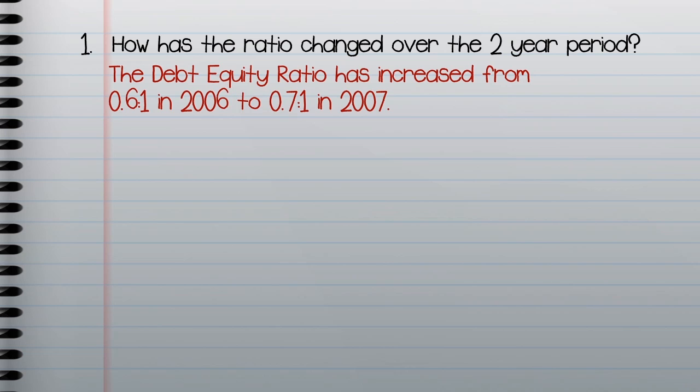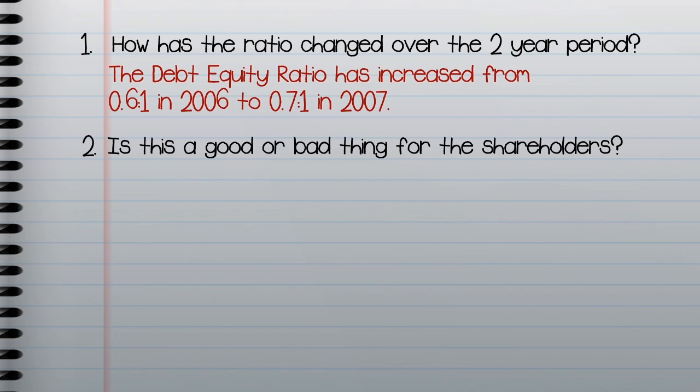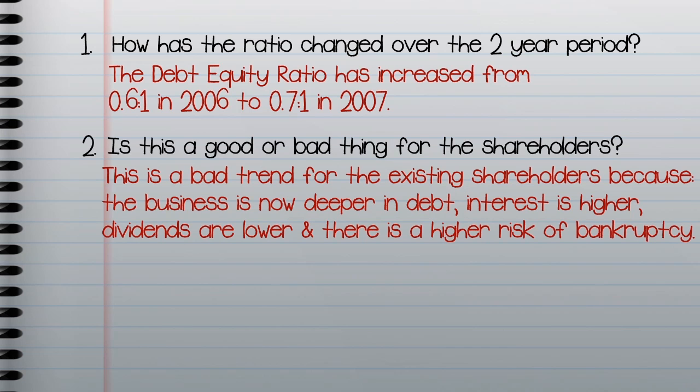Your next comment should be whether this is a good or bad thing for the shareholders. This is a bad thing for the shareholders because the business has more debt. More debt means more interest to pay, which means less profits left over for shareholders, lower dividends, and also more chance they will lose their investment if the business were to go bankrupt.